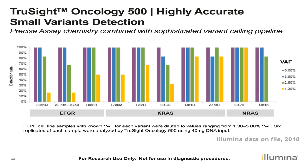The limit of detection for the assay is 5%, at very high levels of sensitivity and specificity. However, with the use of UMIs, error correction, and variant filtering via PEPA2, it is possible to actually detect variants below 5% — that 5% is not a hard cutoff. It is a dynamic cutoff based on the quality of the call and the background noise of that particular sample, allowing detection of mutations down to 1% with lower sensitivity and specificity. So if you see variants called at lower than 5% in your combined variant output, that is expected behavior.